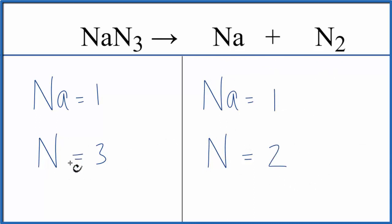When I have an odd number like this with the nitrogens, it's helpful to get this to an even number. So I can multiply it by 2. So I'll put a coefficient of 2, 3 times 2, that'll give me 6. So now I have an even number and I can fix these as well.